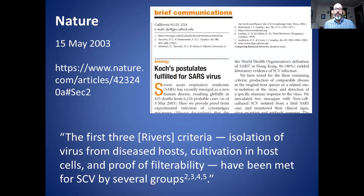Let's get back to the Nature article now that we've reviewed the background. It states that the first three Rivers criteria — isolation of the virus from a diseased host, cultivation in host cells, and proof of filterability — have been met for the SARS coronavirus by several groups, citing footnotes two through five.